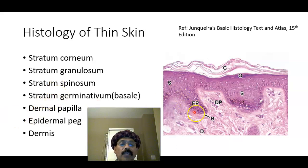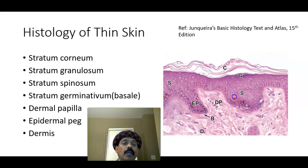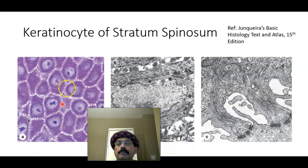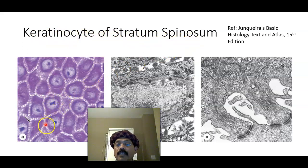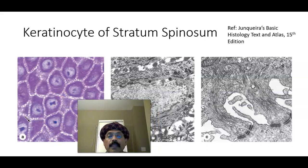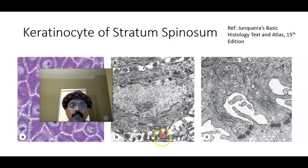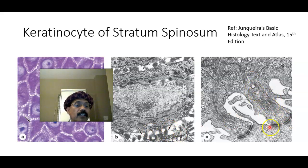This is the stratum basale or stratum germinativum — these cells will multiply and replace the cells above. The keratinocytes of the stratum spinosum have desmosomes, which are intercellular junctions. These are the cellular processes connecting one cell to another, and these are the intermediate filaments associated with the intercellular junctions.